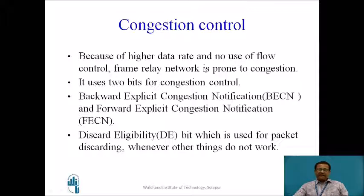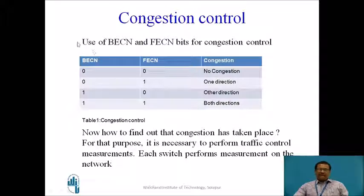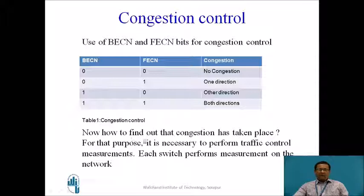Congestion control: because of the higher data rate and no use of flow control, the frame relay network is prone to congestion. It uses two bits for congestion control — BECN and FECN — and a discard eligibility bit for packet discarding whenever other methods do not work. The two bits can be 00 meaning no congestion, 01 meaning congestion in one direction, 10 meaning congestion in the other direction, and 11 meaning congestion in both directions. Traffic control measurements are performed to detect congestion.